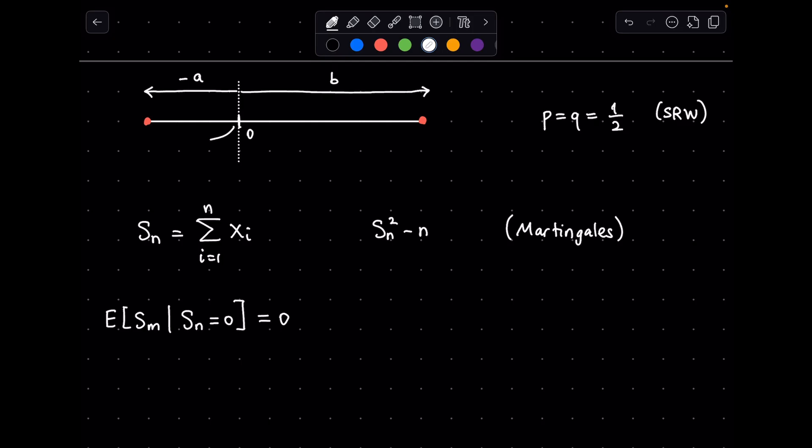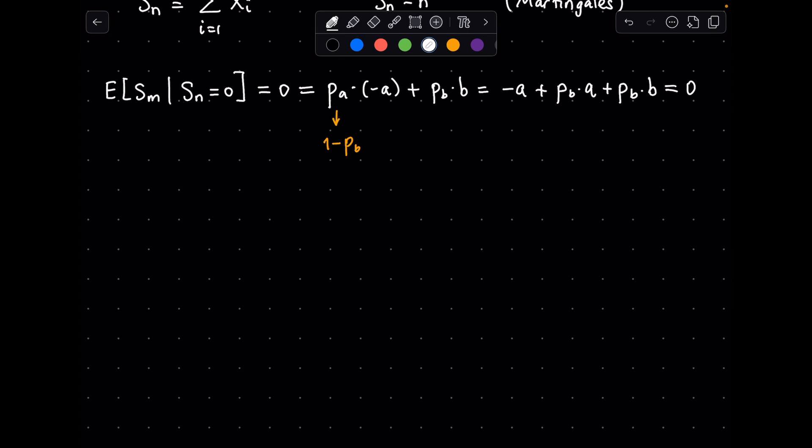Let me denote the probability that the random walk ends at negative a to be p_a, and at b to be p_b. So, this equation can then also be written as the expected value of s_m. Namely, p_a multiplied by negative a plus p_b multiplied by b. Now, p_a must be equal to 1 minus p_b, since the random walk must end at either negative a or b, and nowhere else. Substituting this into p_a gives negative a plus p_b multiplied by a plus p_b multiplied by b, which is again equal to 0.